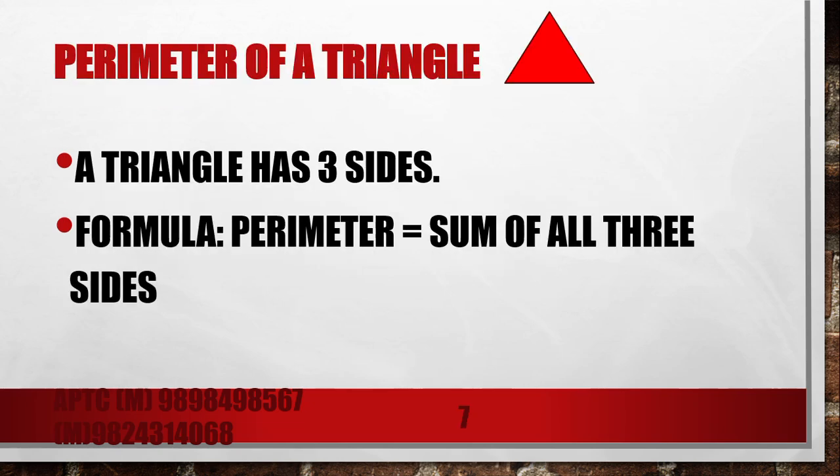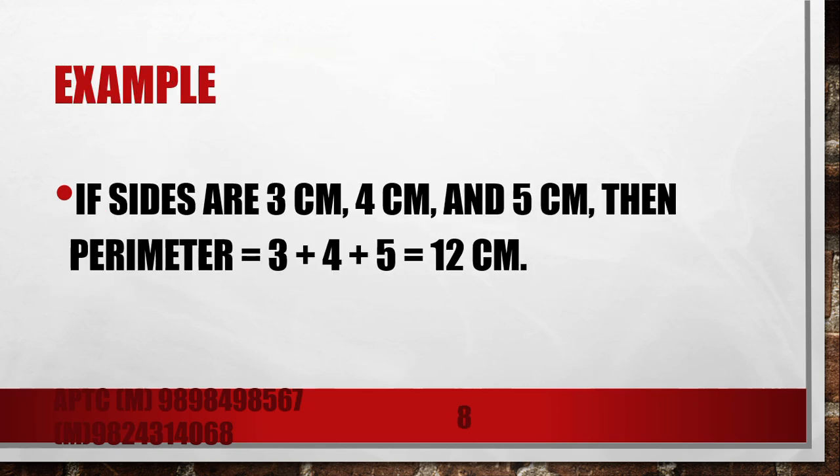Time for triangles. Triangles have three sides. So the formula is sum of all three sides. Example: if the sides are 3 cm, 4 cm, and 5 cm, then 3 + 4 + 5 = 12 cm.